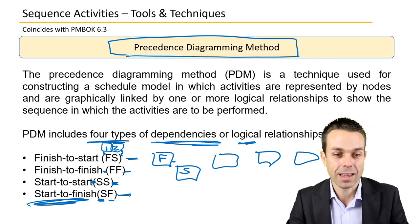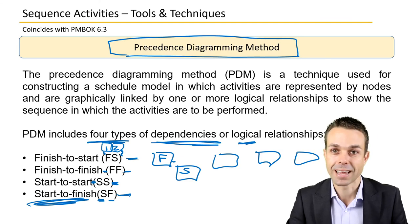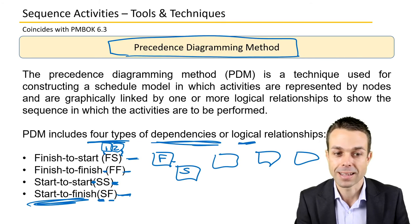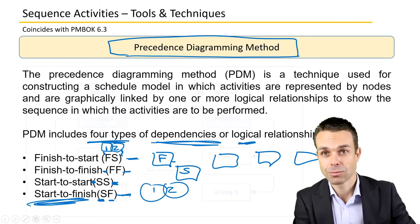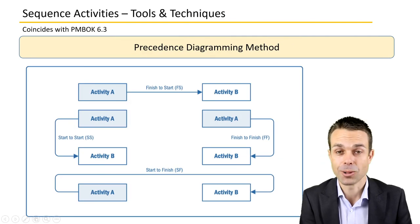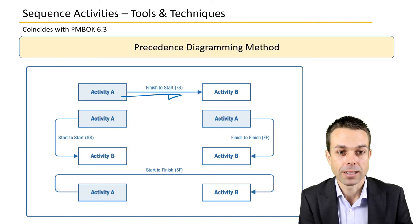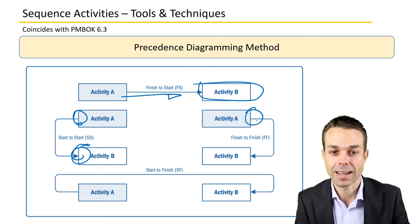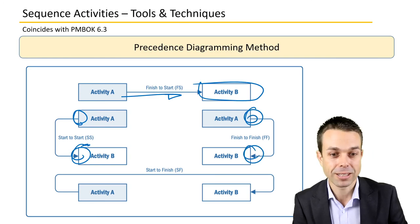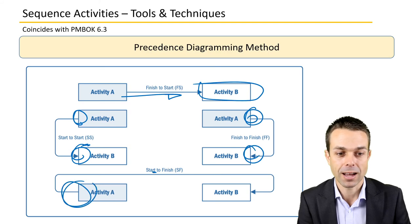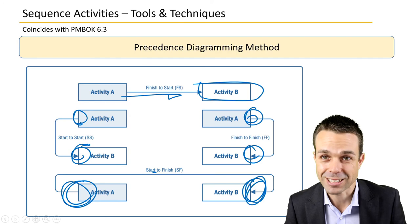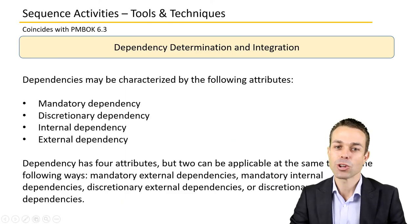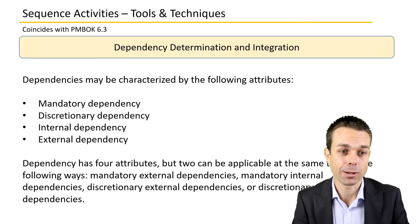You will definitely see something about this on the exam as part of your schedule or sequencing activities. So to summarize: finish-to-start — activity A needs to finish before activity B can start. Start-to-start — activity A has to start before activity B can start. Finish-to-finish — activity A needs to finish before activity B can finish. Start-to-finish — activity A has to start before activity B can finish.